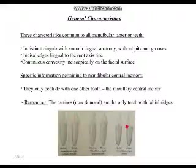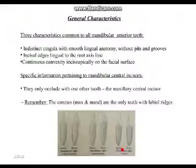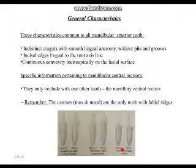Remember: maxillary and mandibular canines are the only teeth with labial ridges. We haven't discussed labial ridges for centrals or laterals because they're only found on canines. The labial ridge is a ridge in the middle of the labial surface of the canine — a slight protrusion — which then dips on both sides and creates that pointed incisal tip. If you hear 'labial ridge,' think canine.